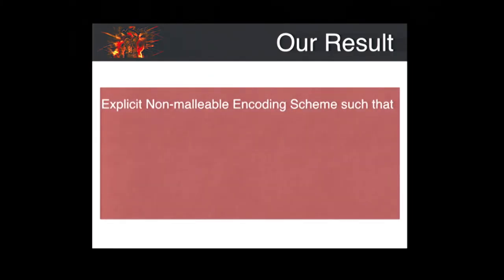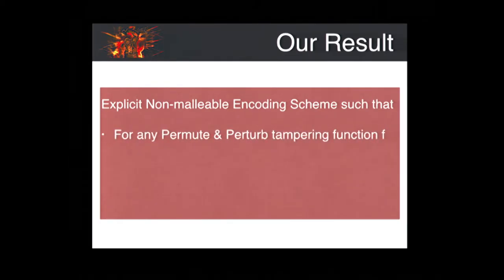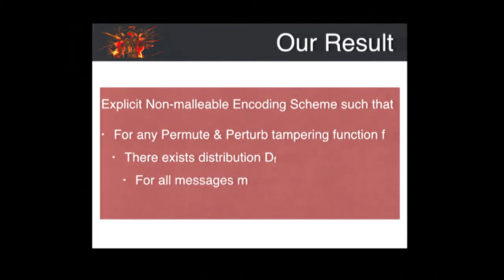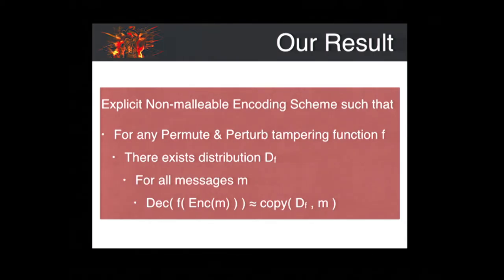Our result provides an explicit construction of a non-malleable code such that for any tampering function f which is a permute-and-perturb tampering function, we show the existence of a simulating distribution D_f, such that for any message m being encoded, the distribution of the tampered message in the real world will be close to the simulated tampered distribution.